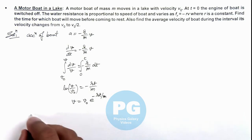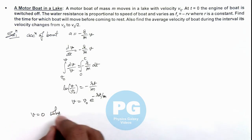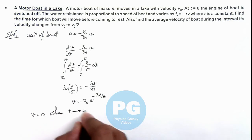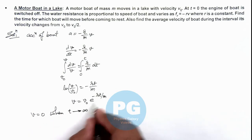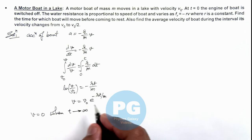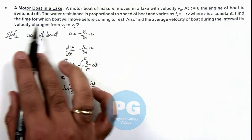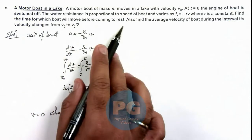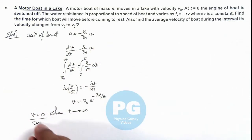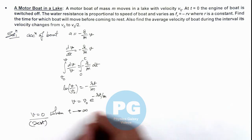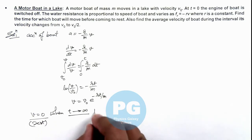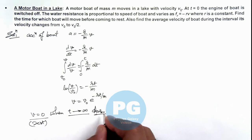Here we can see the value of v equals zero only when t tends to infinity. So the boat will come to rest only when t tends to infinity, or after a very, very long time. This will be the result of the first part of the problem.